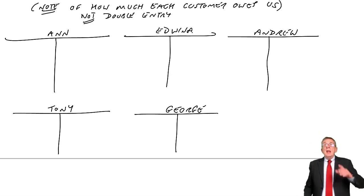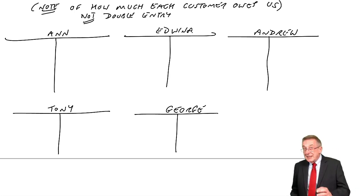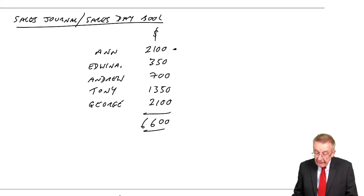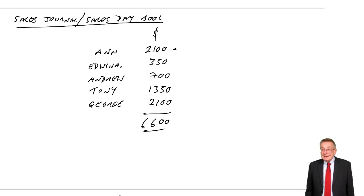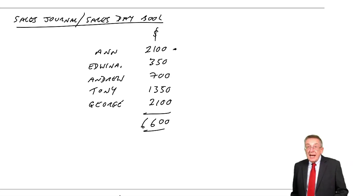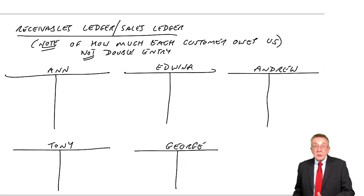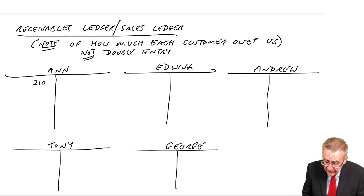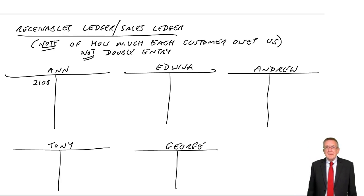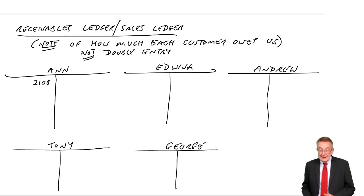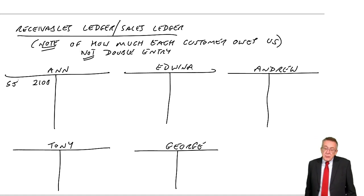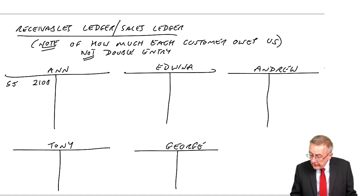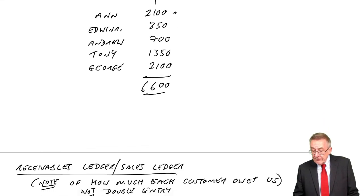What happens is, day by day, every time we sell on credit it's listed in the Sales Journal or Sales Day book, and at the same time we make a note in the receivables or sales ledger. So we sold to Anne for £2,100 — make a note on Anne's page. We'll put it on the debit side because that's normally where we put receivables, but it's not a real debit and certainly there's no credit. I'll put 'SJ' for Sales Journal against it, because if we ever needed to check that figure, it was in the Sales Journal.